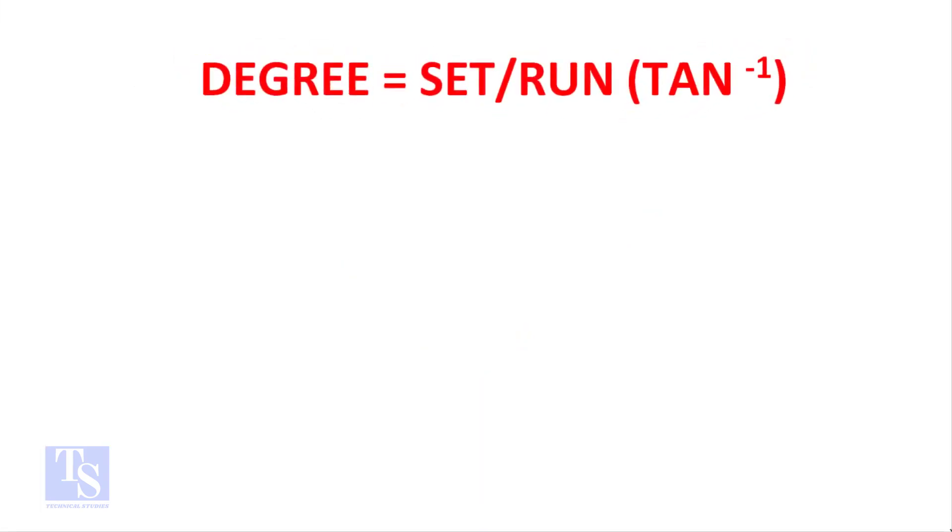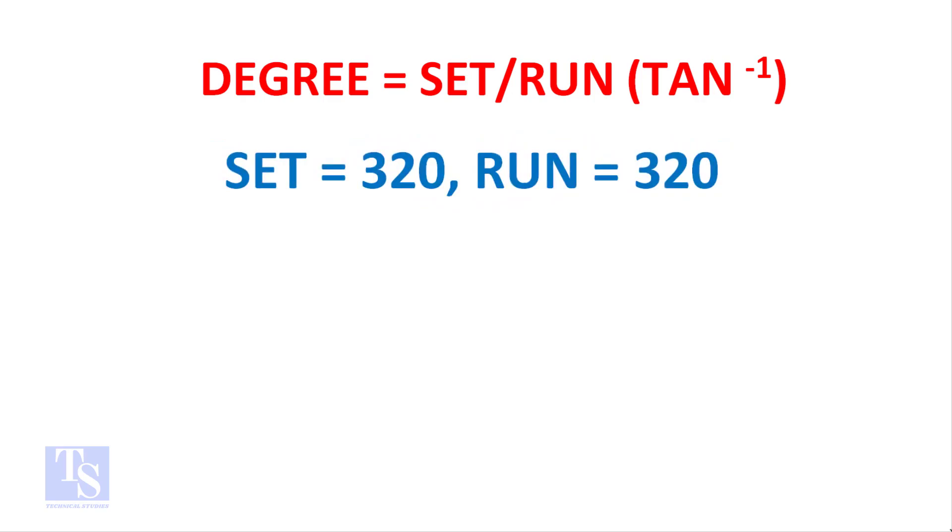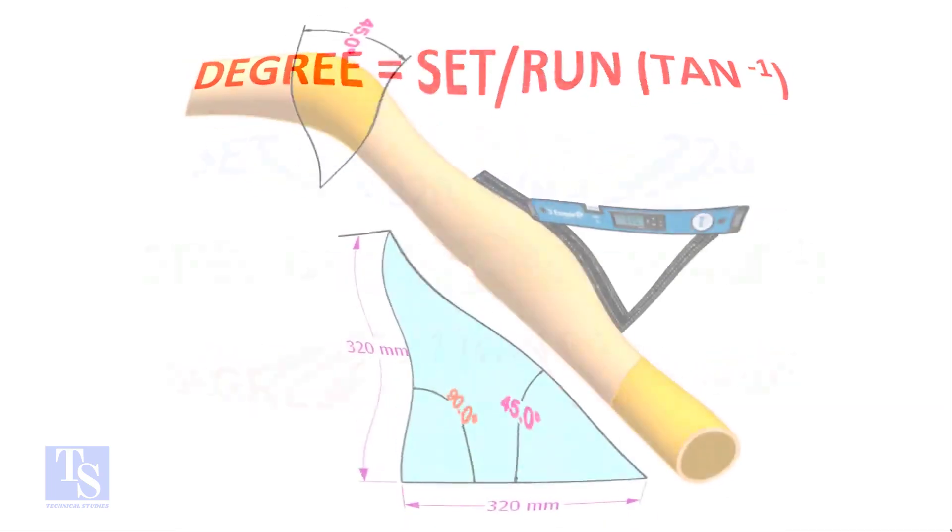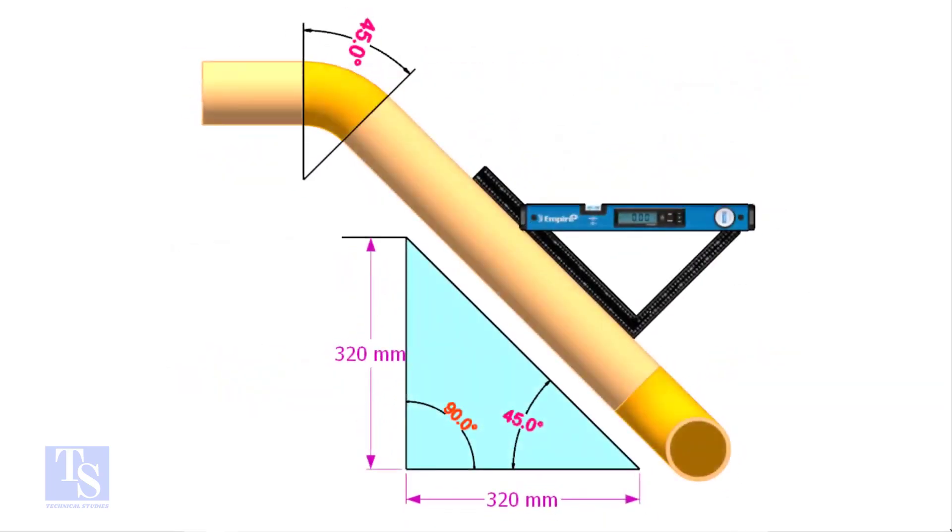Degree equals set divided by run, tan inverse. The set and the run both are 320mm. Degree equals 320 divided by 320, tan inverse. One tan inverse equals 45 degrees. So the equation proves that the line slope is 45 degrees.